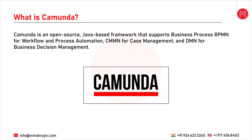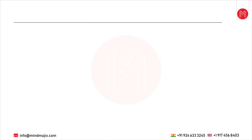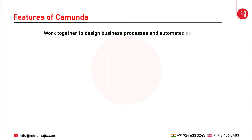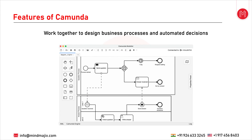So let's move on to the features of Camunda. The first feature is working together to design business processes and automate decisions. Kavimo is an easy-to-use collaboration solution for sustainable business IT alignment. It allows business analysts, project managers and developers to work together in real time when designing automated processes, human workflows and business decision tables.